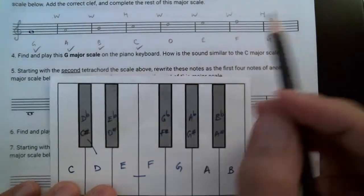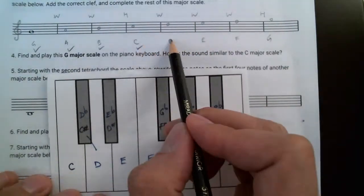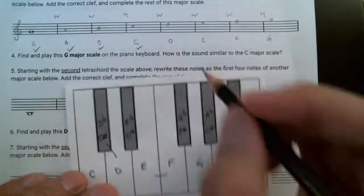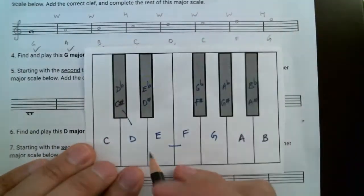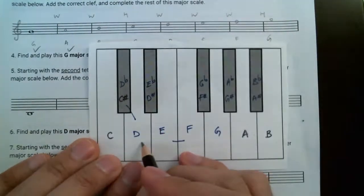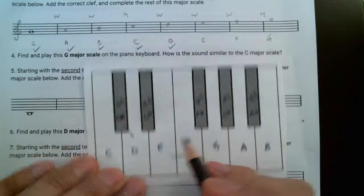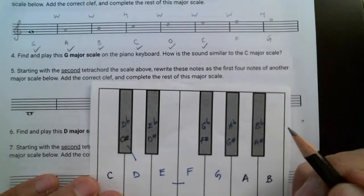Okay, so now I'm going to evaluate starting here. From C to D, I need a whole step. From C to D is indeed a whole step, so this is done. No changes needed. From D to E is a whole step, or we need a whole step, and from D to E, indeed, it is a whole step, so also no change needed.